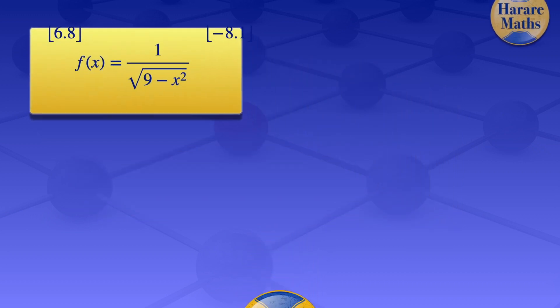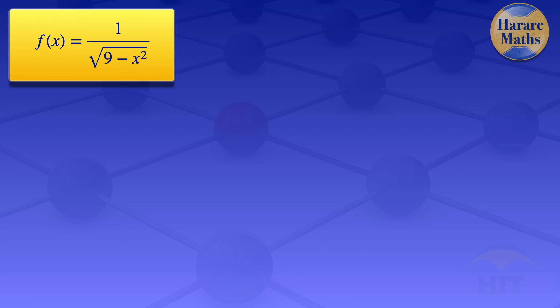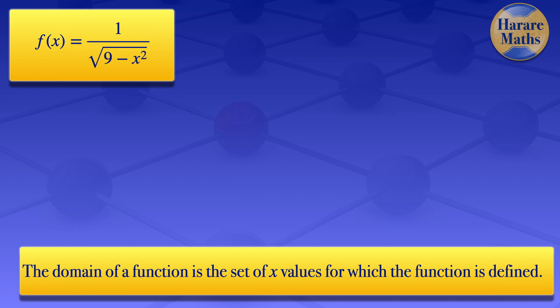I'll start by looking at the first question — the domain of that given function. By definition, the domain of a function is the set of values of x for which the function is defined. In this case, we are having a square root there, so for that function to be defined, the denominator of that function must not be equal to 0.